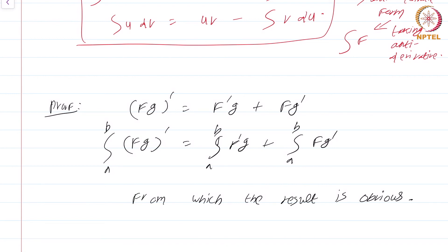Two famous theorems that you have used extensively in high school and probably in undergraduate studies to evaluate integrals — integration by substitution and integration by parts — can both be easily justified as simple consequences of the fundamental theorem of calculus. Note that one consequence of the fundamental theorem is that every continuous function has an anti-derivative.